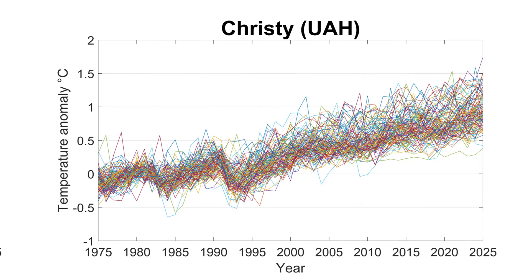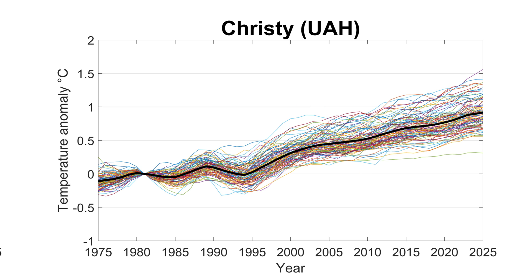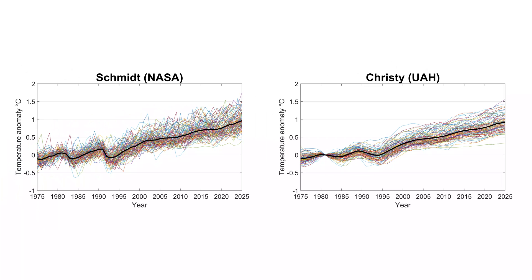Let's start with the model projections. Christie is using 102 model projections for the period 1975 to 2025. Plotting a mean line shows the average of these 102 projections. The first thing Christie did was a five-year smoothing on his data — for these graphs that's not a big deal and he appears to have done this correctly, though we'll return to smoothing later. Schmidt instead decides to take the yearly averages, which tidies the graph up.